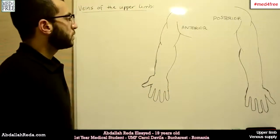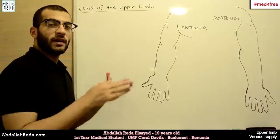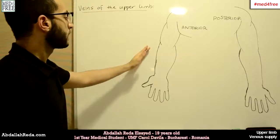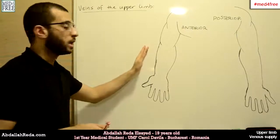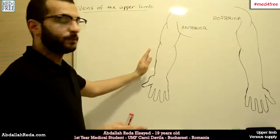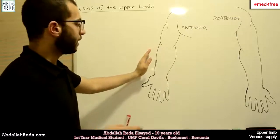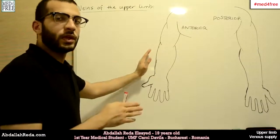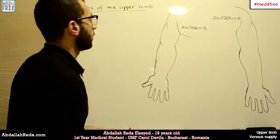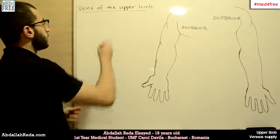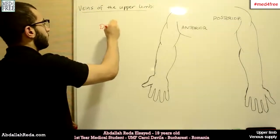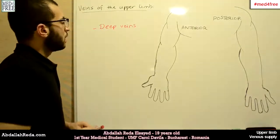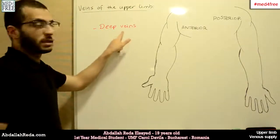For the veins, there's a group of veins which have the same names as the arteries we just mentioned. They follow the same course and there are usually two of them that accompany the arteries. For example, for the brachial artery we have two brachial veins. These veins are the deep veins.